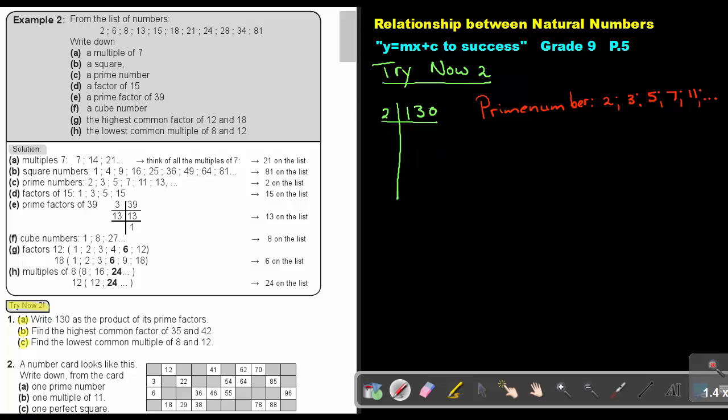Start with 2, and that gives 65. Then continue. 2 cannot go. 3 cannot, because 6 plus 5 is 11, which is not divisible. But 5 goes into 13. 13 is a prime number. So the product of its prime factors is 2 times 5 times 13.